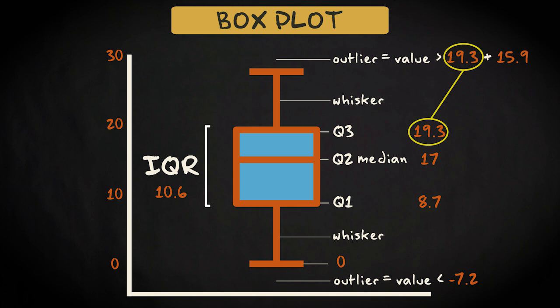Q3 is 19.3, so all values higher than 19.3 plus 15.9 equals 35.2 are outliers. We don't have values this high, so we don't have outliers on this side either. The end of the upper whisker therefore is equal to the maximum value, which is 27.7.